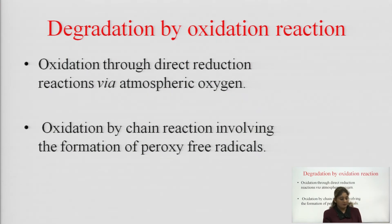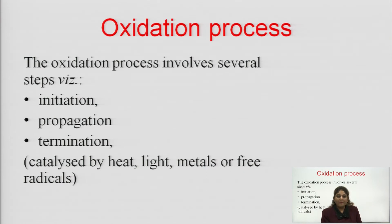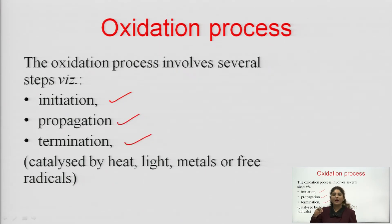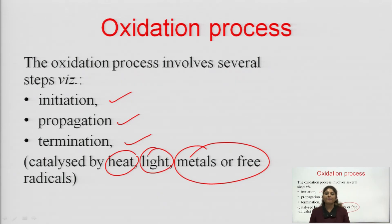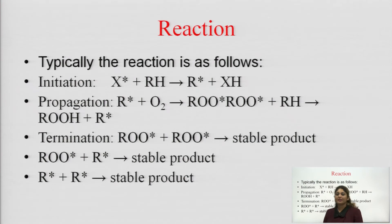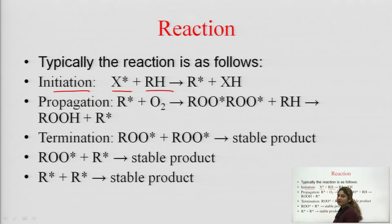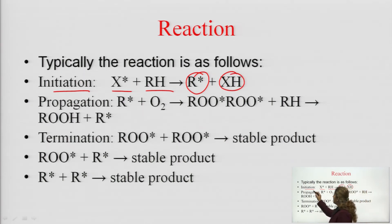The oxidation process involves different types of steps: initiation, propagation, and termination. This oxidation process is catalyzed by heat, light, and metal or free radicals, which enhance the oxidation process. In the initiation step, the compound X reacts with RH, and R separates, forming X and H. This is the initiation — X is getting reacted with H.